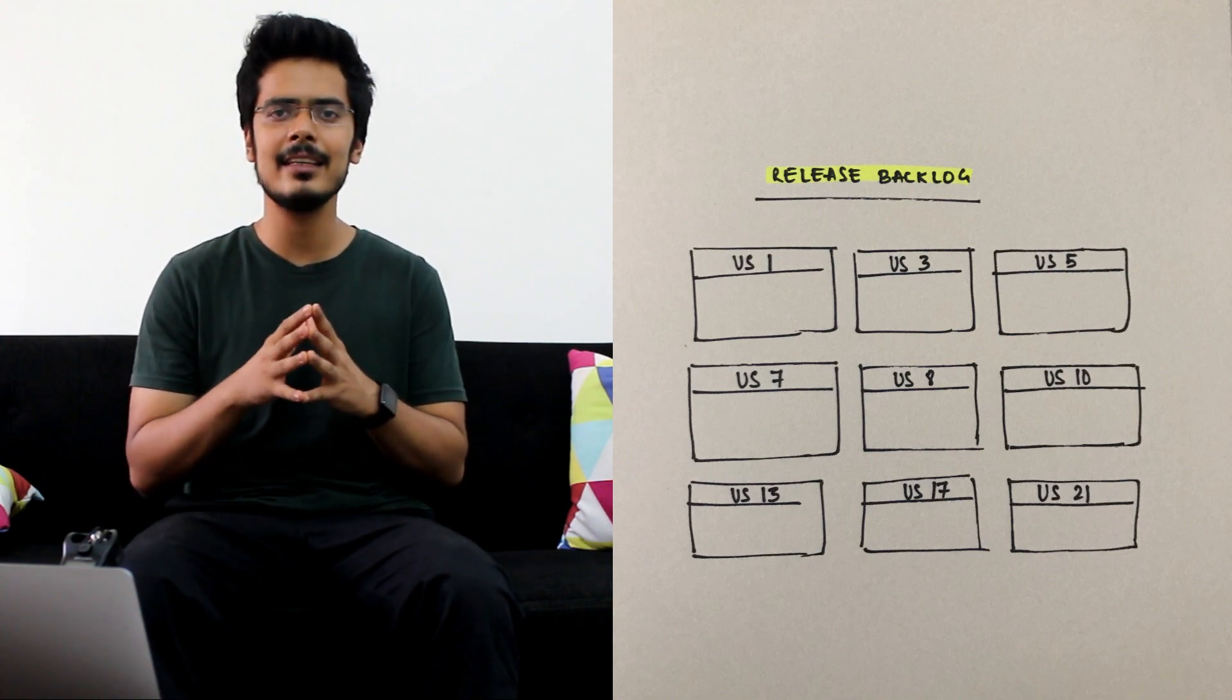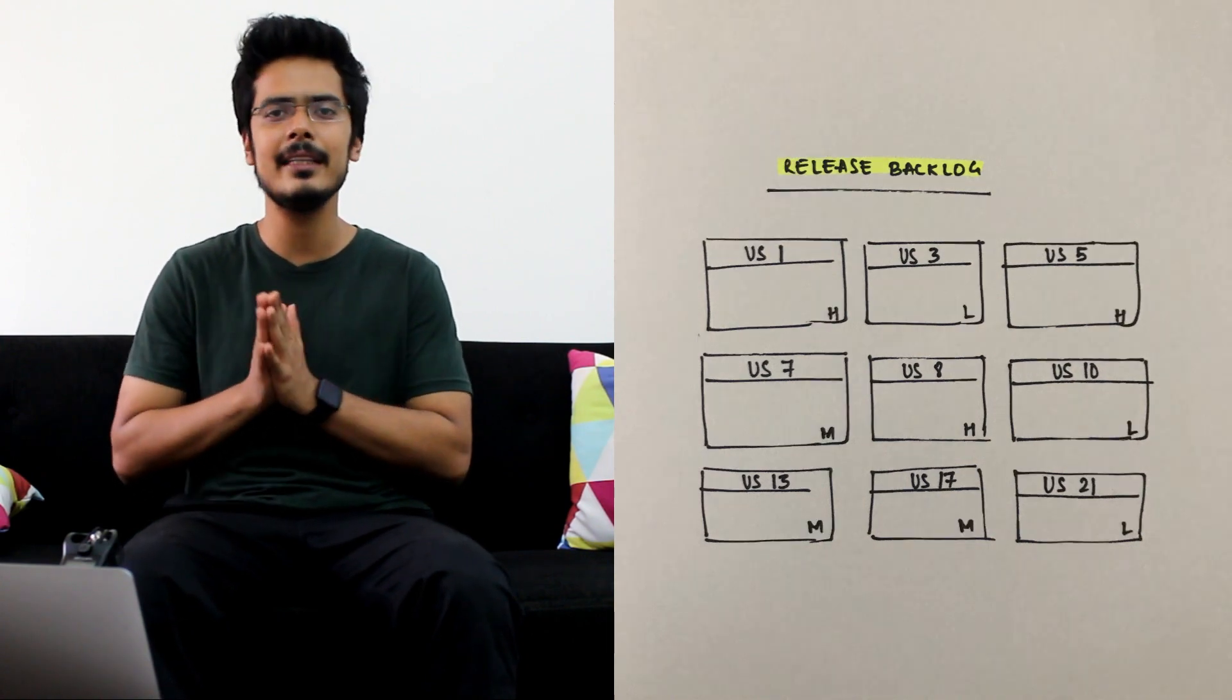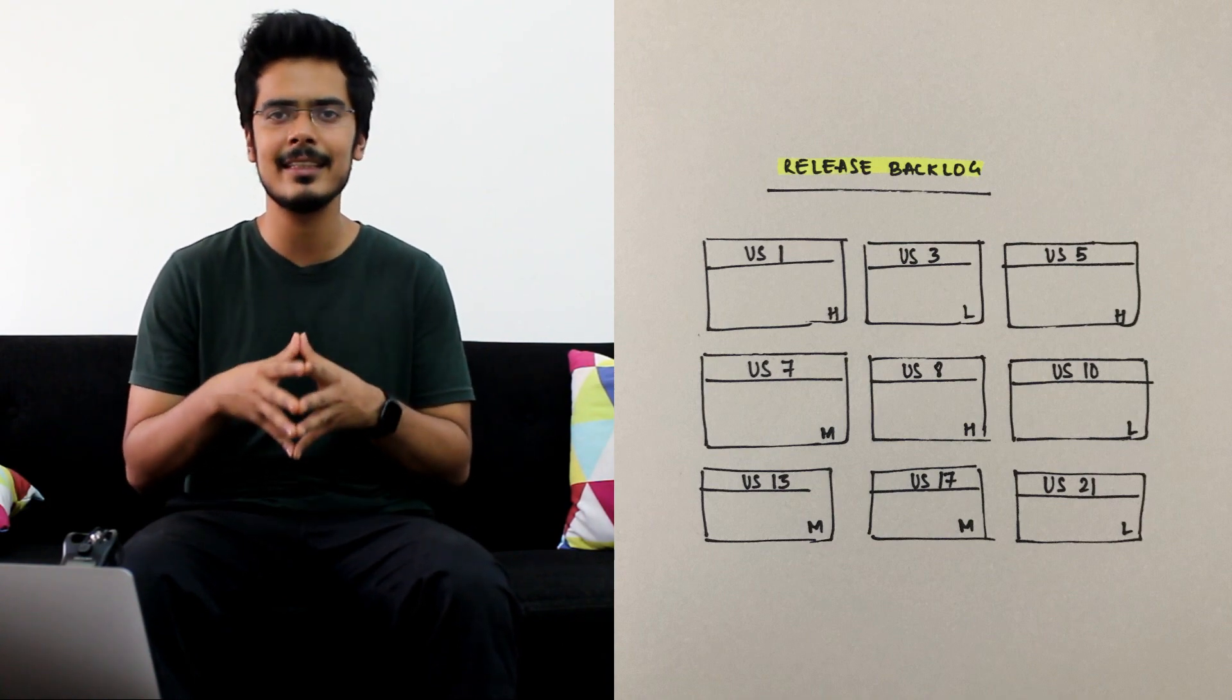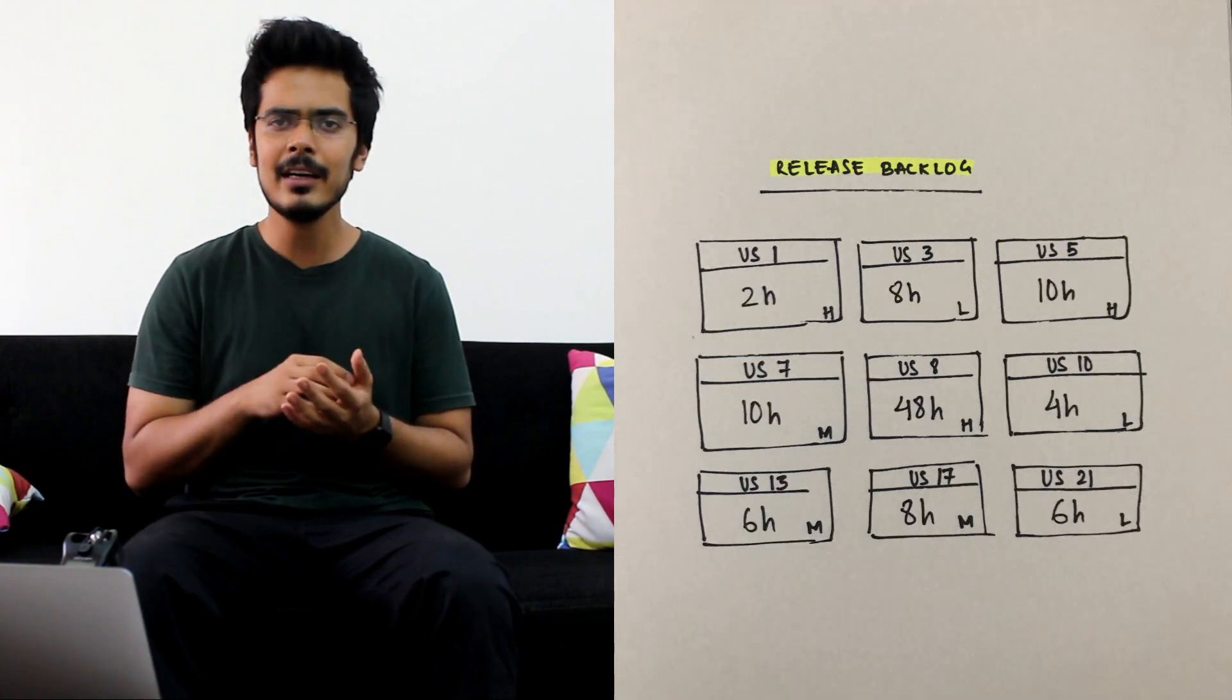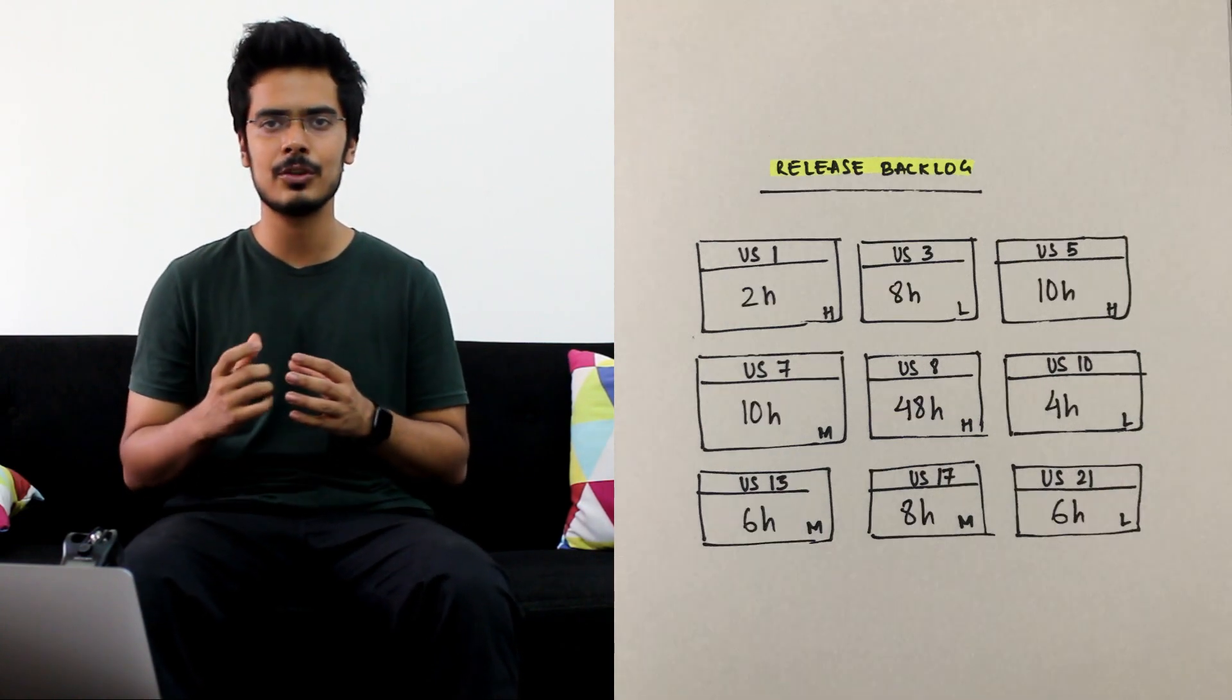From here they prioritize the list of user stories into high, medium and low. So basically the team gets an idea of what is of utmost importance in the next release cycle. From here the team starts adding time estimates to each of the user stories.